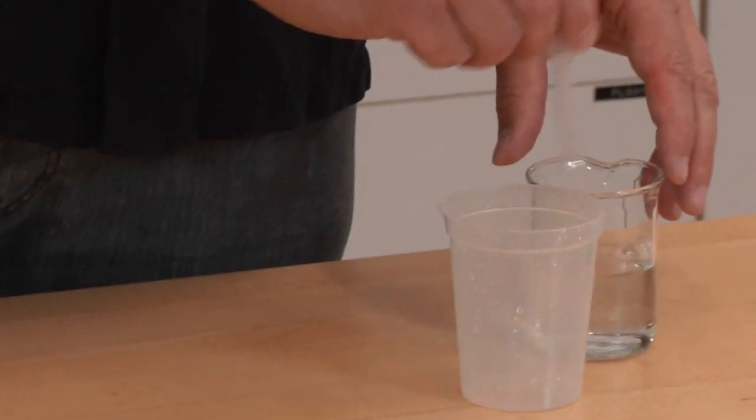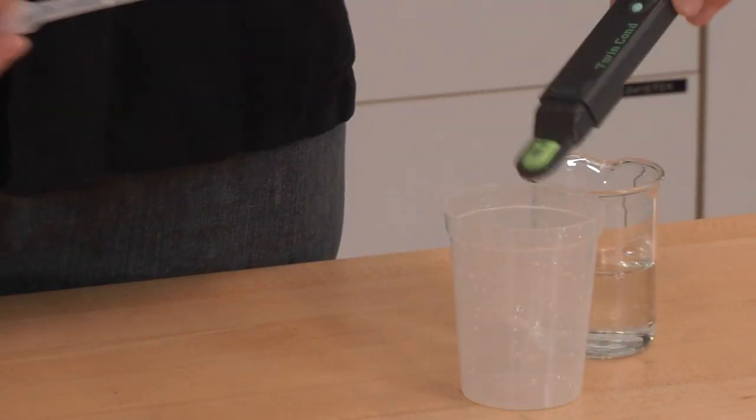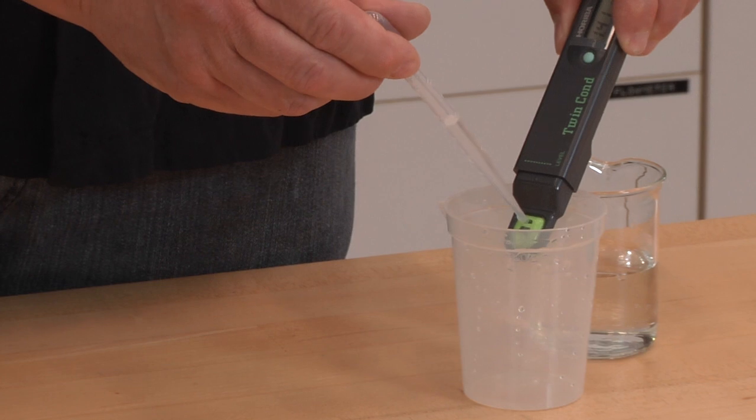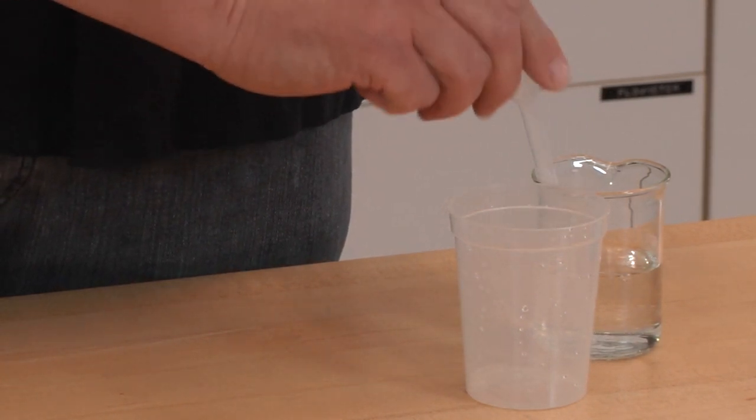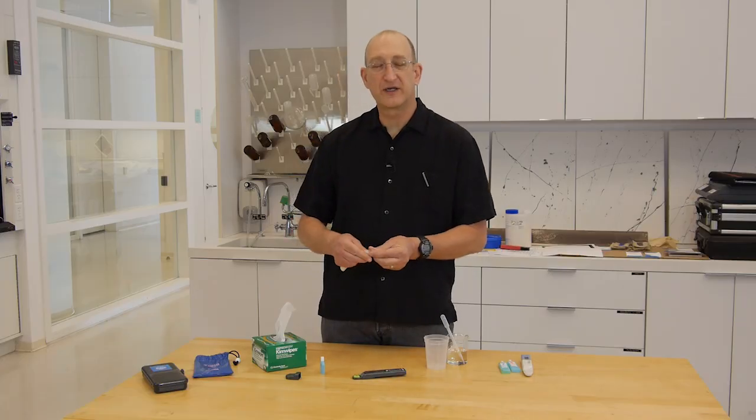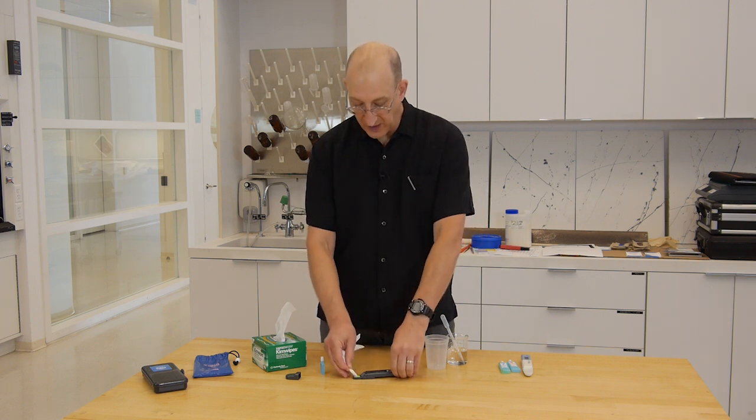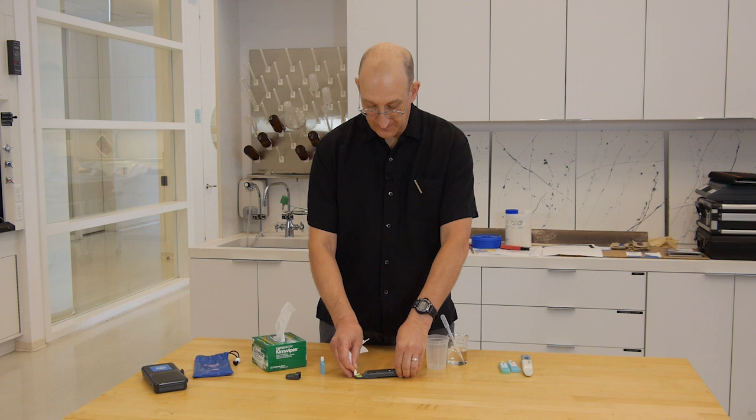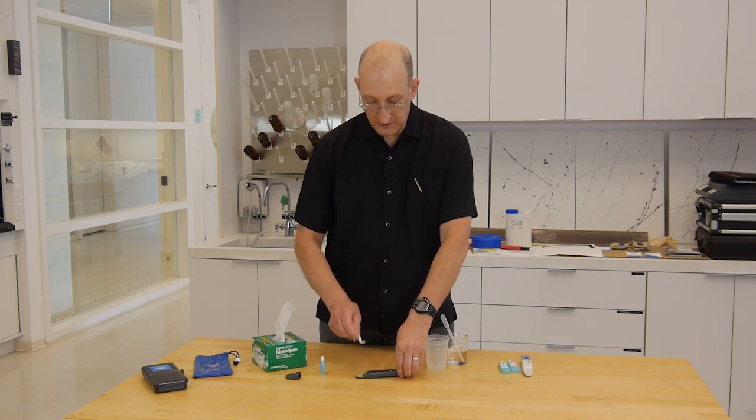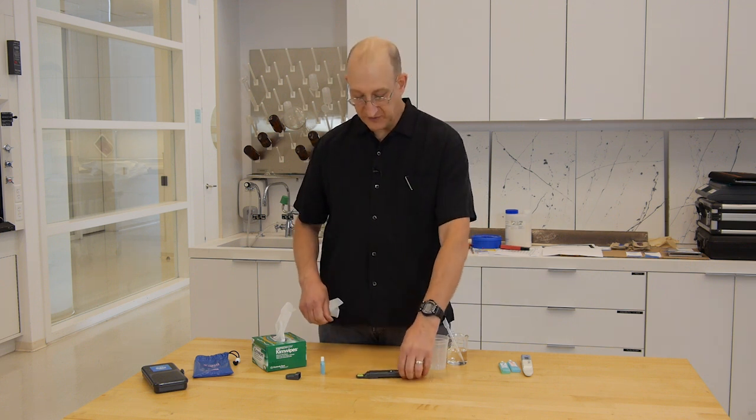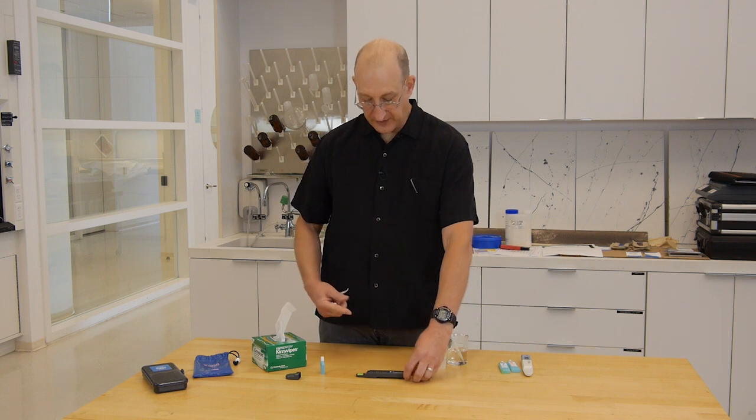We then rinse the electrode head with deionized or distilled water and flush it out. Because dilution matters for conductivity meters, we want to make sure we always dry the sample well with a little piece of kimwipe to get the water out, so we don't dilute our next reading.